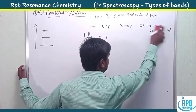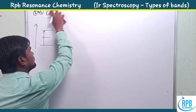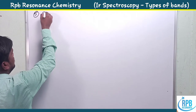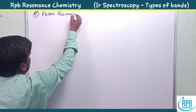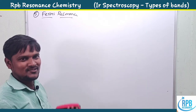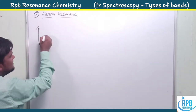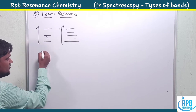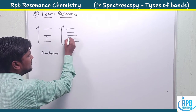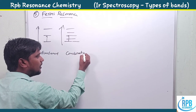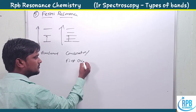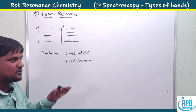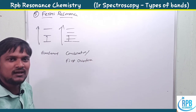Now let's move on to the fifth one — Fermi resonance. This was first observed by the scientist Enrico Fermi, so it is named Fermi resonance. In an energy diagram, from ground state to first excited state is the fundamental transition. Another level — at approximately the same energy — may be a combination tone or first overtone. The matching of the frequency of a fundamental transition with a first overtone or combination tone is called Fermi resonance.